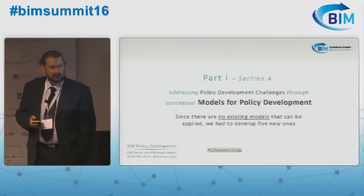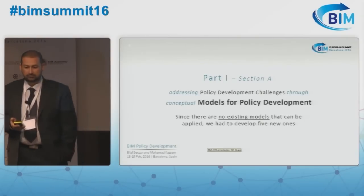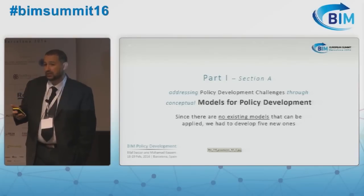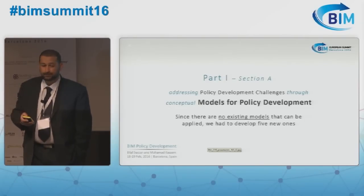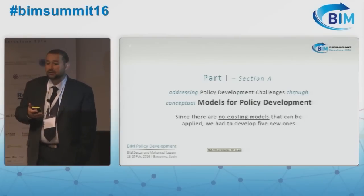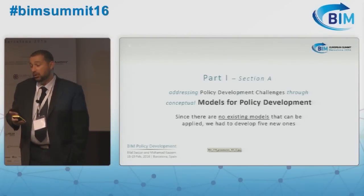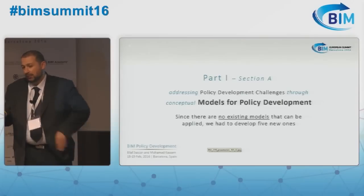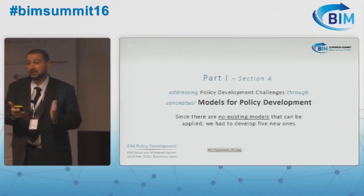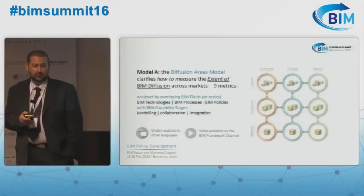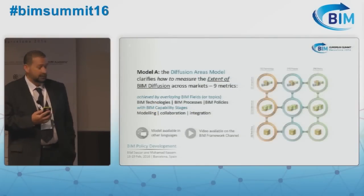We've developed over maybe two years a set of models that we use in assessing the performance, the macro maturity and macro adoption of countries. There are five of them I'm going to present today. Together, they help a policy maker to either develop a roadmap or help researchers to look at different countries and compare them. So that's really what we're trying to do — help policy makers or researchers investigate their own markets. I'm going to briefly explain these five and then give the floor to Mohamed.